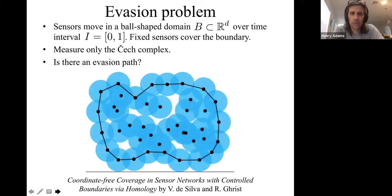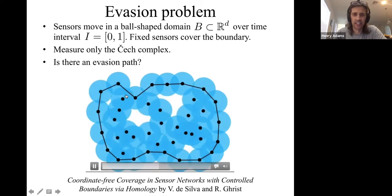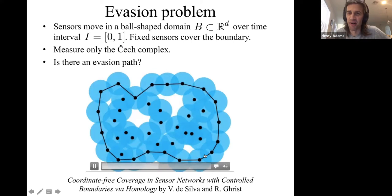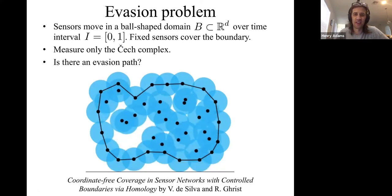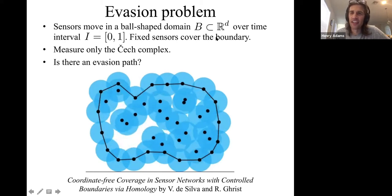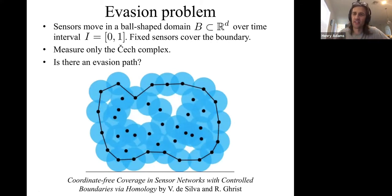Pretend we have a ball-shaped domain. Here the ball-shaped domain is given by these black edges forming a loop. So it's not strictly a ball, but it's a ball to a topologist. We have a ball-shaped domain in Euclidean space of whatever dimension you want, but all of my pictures will be ball-shaped domains in the plane.